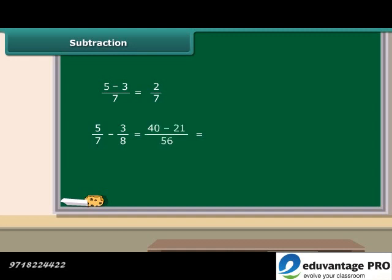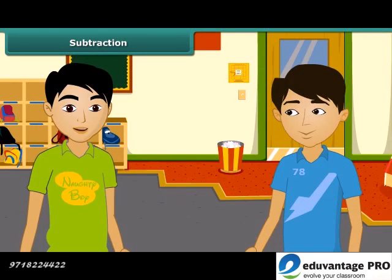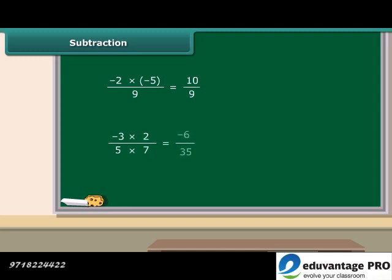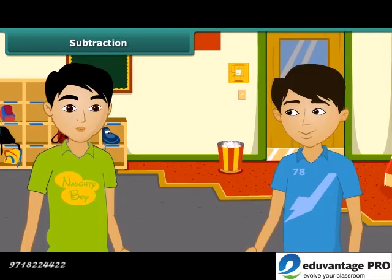Can you guess how we multiply rational numbers? While multiplying a rational number by a positive integer, we multiply the numerator by that integer, keeping the denominator unchanged. When we multiply two rational numbers, we multiply the numerators together and then multiply the denominators together. Well done!